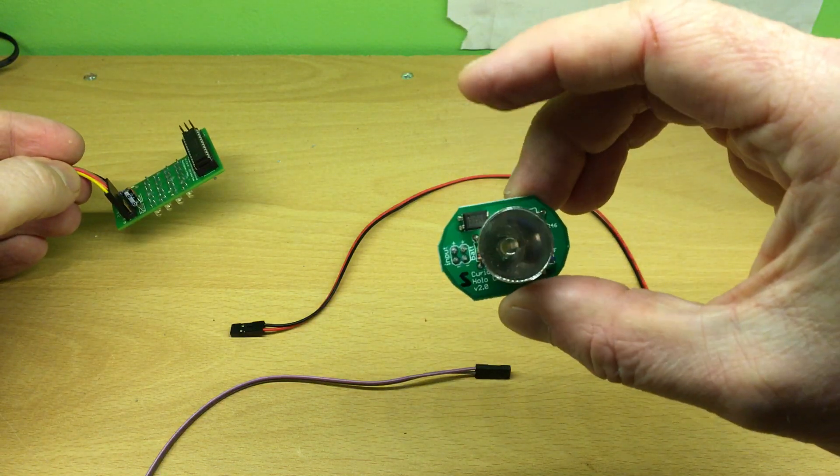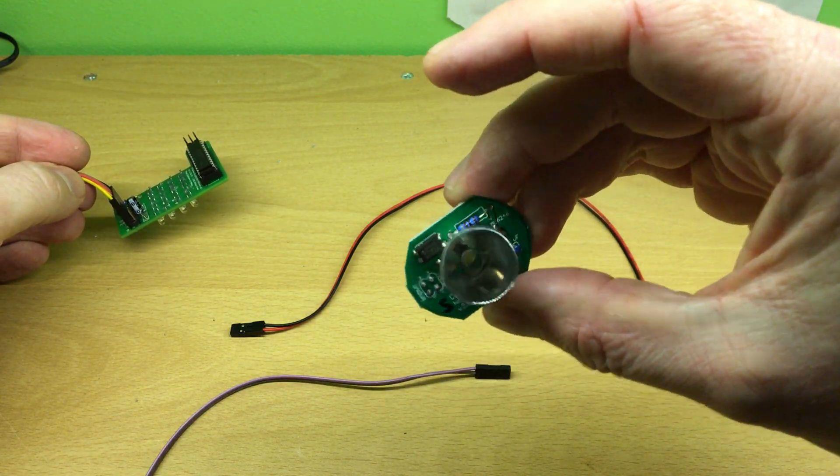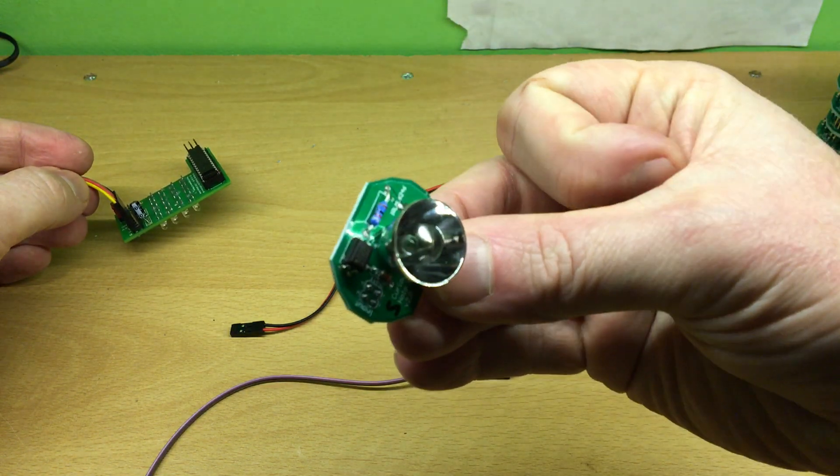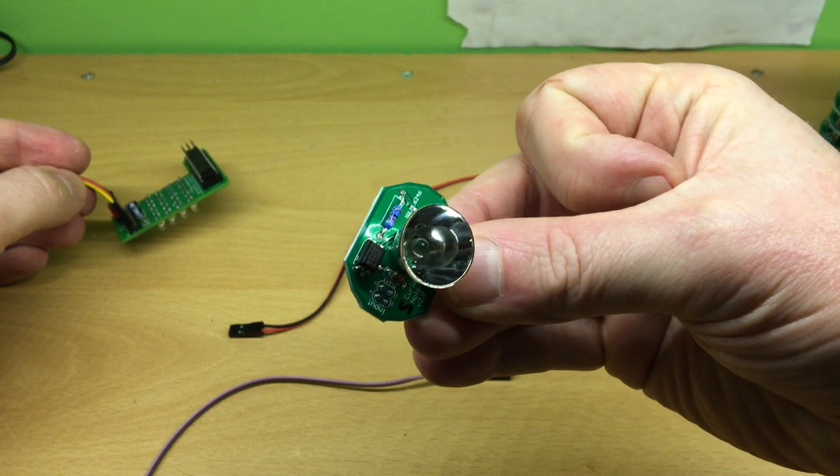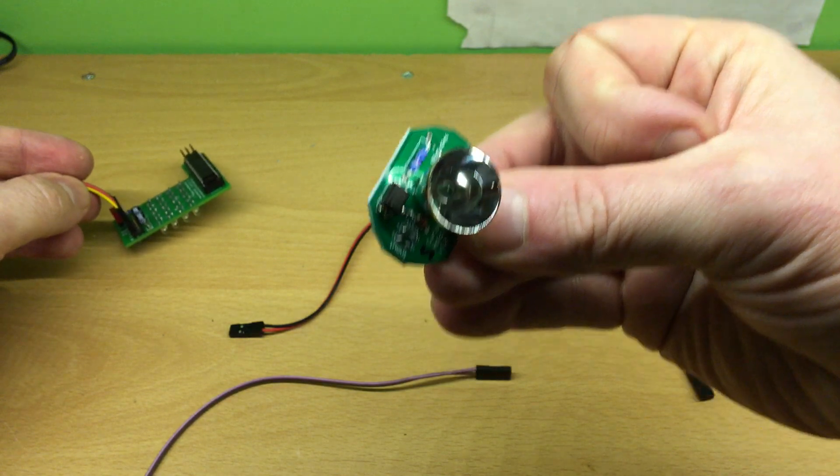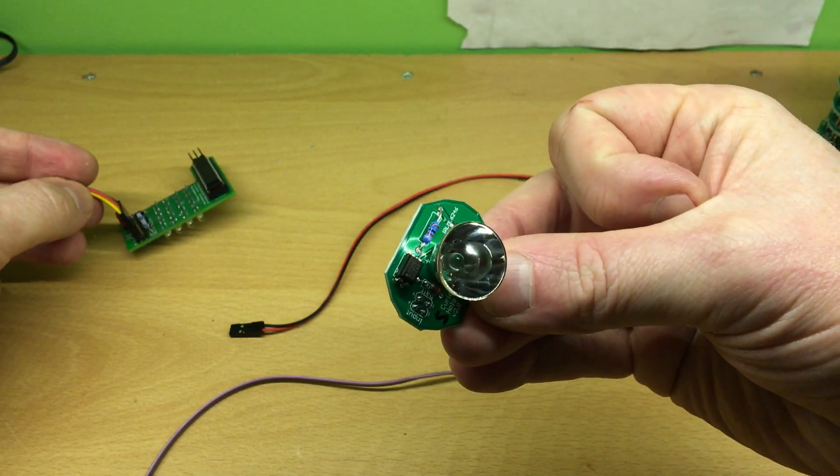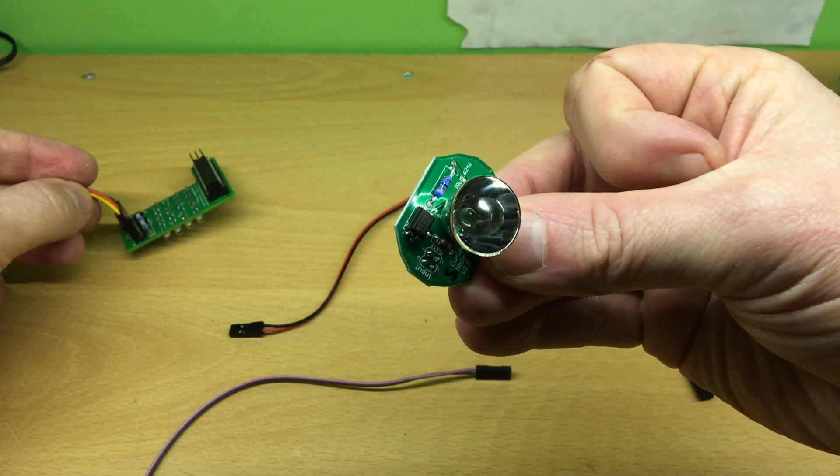Now this particular board is set for 5 volts. Most of the systems out there are 5 volts. Both versions of the Mark Duino boards are 5 volts, the Jedi is 5 volts, and I believe the T-Sys is 5 volts as well.